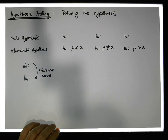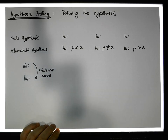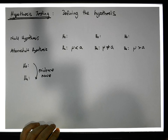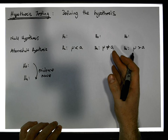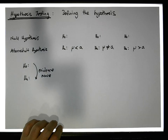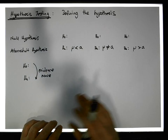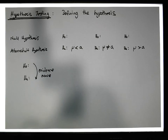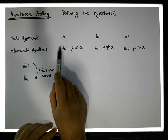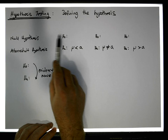What we always want to try to prove needs to be the alternative. I hear the statement all the time that you put the status quo in as the null, but it depends: are we trying to find evidence to support the status quo, or are we trying to find evidence to refute the status quo? That can be quite tricky.